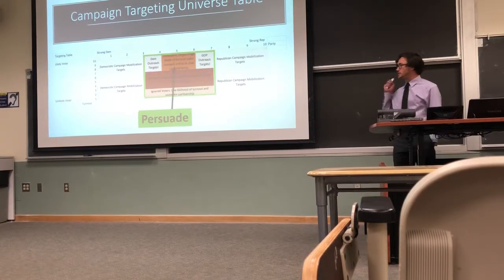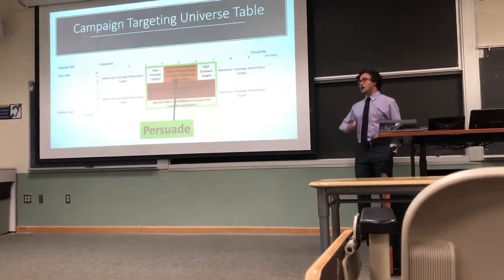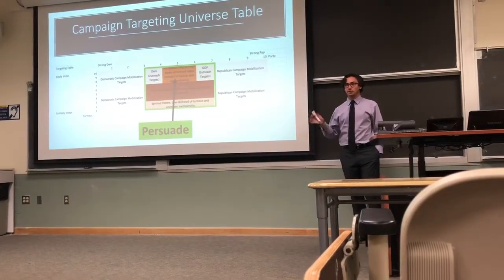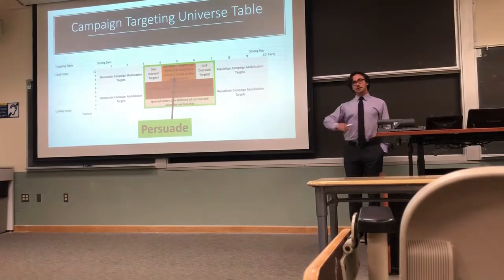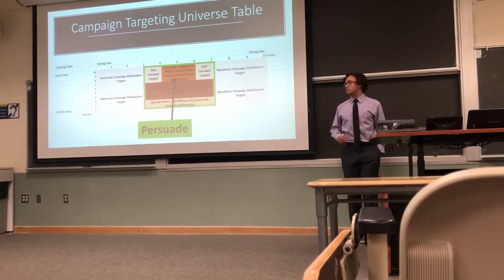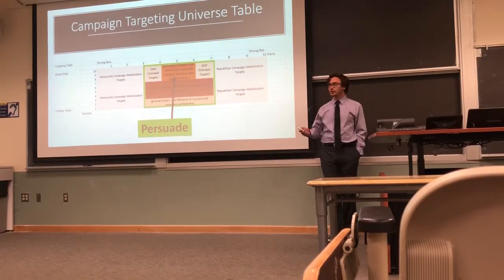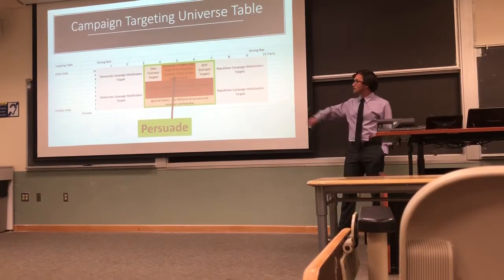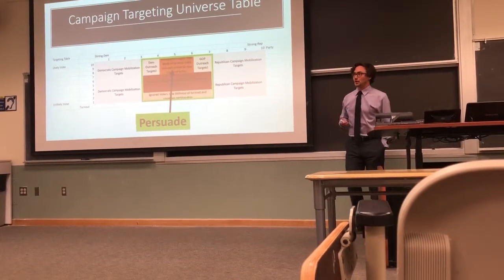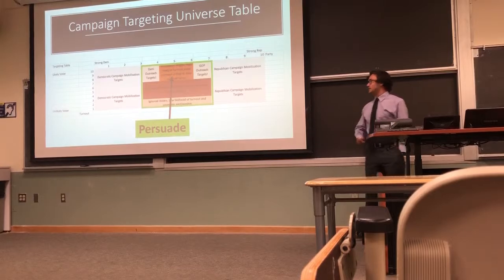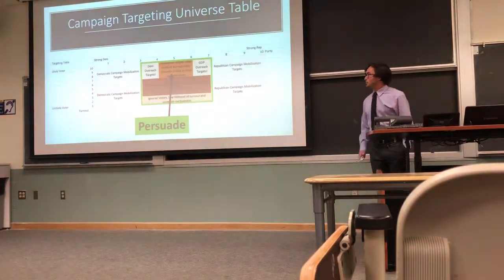What are we left with when we remove those mobilization zones? We have the persuasion universe — the center of the graph, where we find unclear scores on partisanship. We're not sure if you're a strong Democrat or a strong Republican; you fall right in the middle. The least useful people to campaigns are those at the bottom of the persuasion zone — we doubt they're going to turn out to vote and we also don't know who they're going to vote for if they do. That's a very inefficient person to try to talk to. As you go up that graph, those are the people you want to reach.